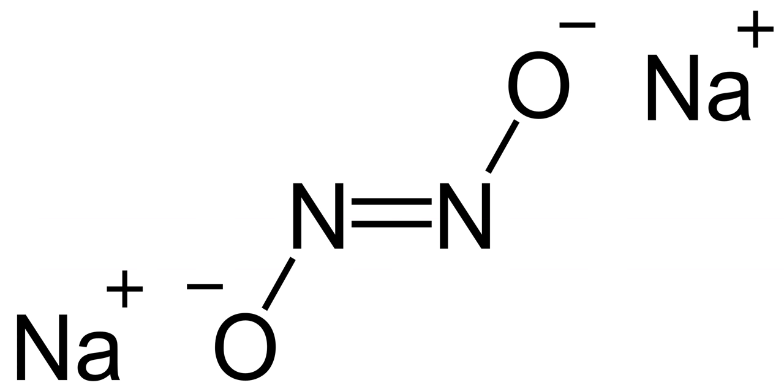Sodium hyponitrite is conventionally prepared by reduction of sodium nitrite with sodium amalgam. 2 sodium nitrite plus 4 Na Hg plus 2 H2O yields sodium nitride O2 plus 4 NaOH plus 4 Hg.